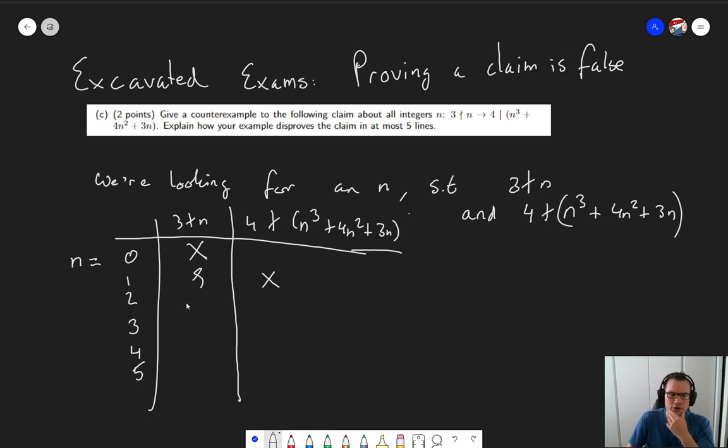So let's try the next one. 3 does not divide 2. That's correct. 2 to the third is 8. 4 times 2 squared is 16. 8 plus 16 plus 6. 8 plus 16 is 24. Plus 6 is 30. 4 does not divide 30. That's true. So here we have our counter example.